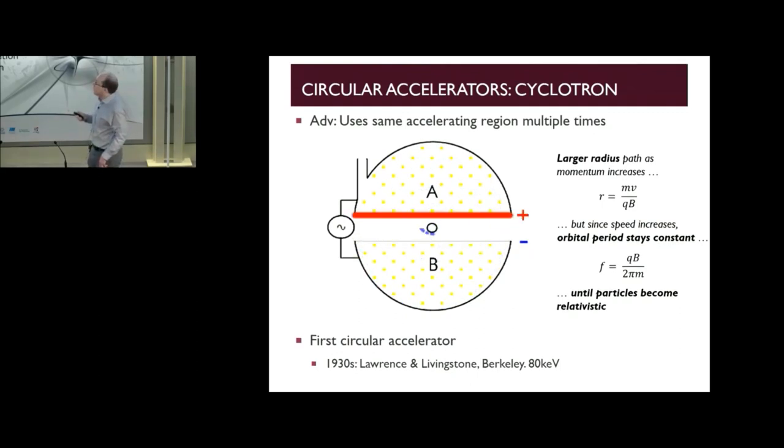So each time the particle crosses this gap between the two electrodes, it will be accelerated up to higher and higher energies and high momentum. When it has high momentum, the particle will move in circles of larger and larger radius, so it gradually moves out to the outside of this machine.